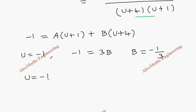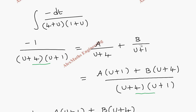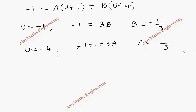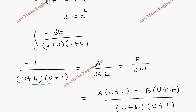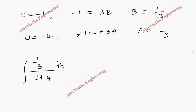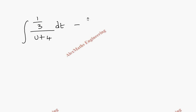When u = minus 4, we get minus 1 = minus 3A, and the B term is zero. Cancelling both minus signs gives A = 1/3. Substituting back: the integral becomes (1/3) integral dt/(u + 4) plus (minus 1/3) integral dt/(u + 1), with respect to t.